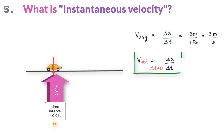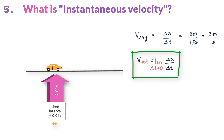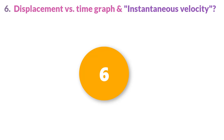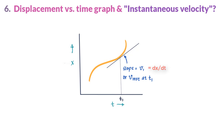Mathematically, as delta t tends to 0, the ratio delta x divided by delta t gives the instantaneous velocity at time t. This is written as v equals the limit of delta x over delta t as delta t tends to 0. Alternatively, v is the rate at which position x changes with time at that instant — v is the derivative of x with respect to time t. On an x versus t graph, the slope of the curve at any point represents the instantaneous velocity and equals dx/dt.